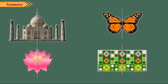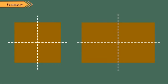The line which divides the figure into two halves is called the line of symmetry. Lines of symmetry can be vertical as well as horizontal.